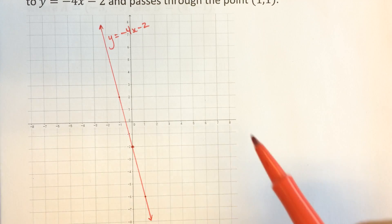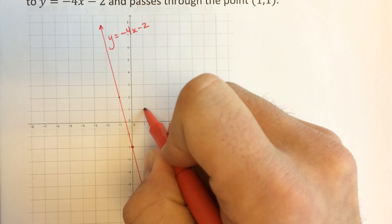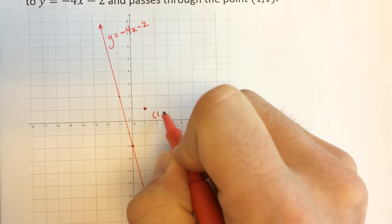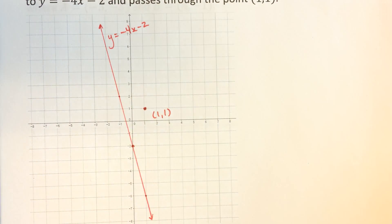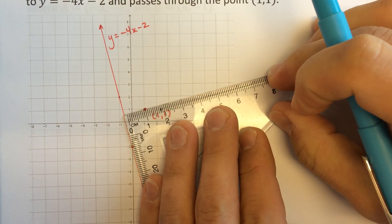And we want to have a line that's perpendicular and goes through the point (1,1). So (1,1) is right here, and I want the line that is perpendicular to this one. So I'll just kind of sketch it in here.